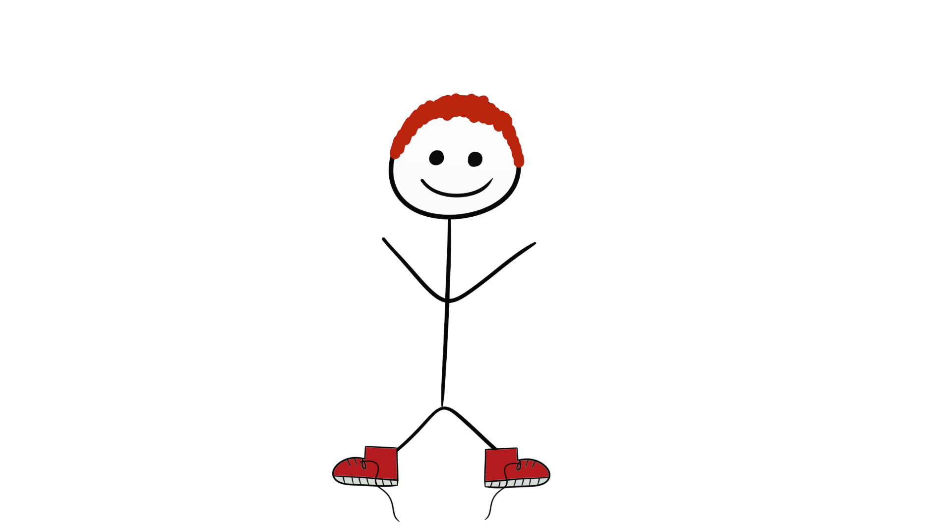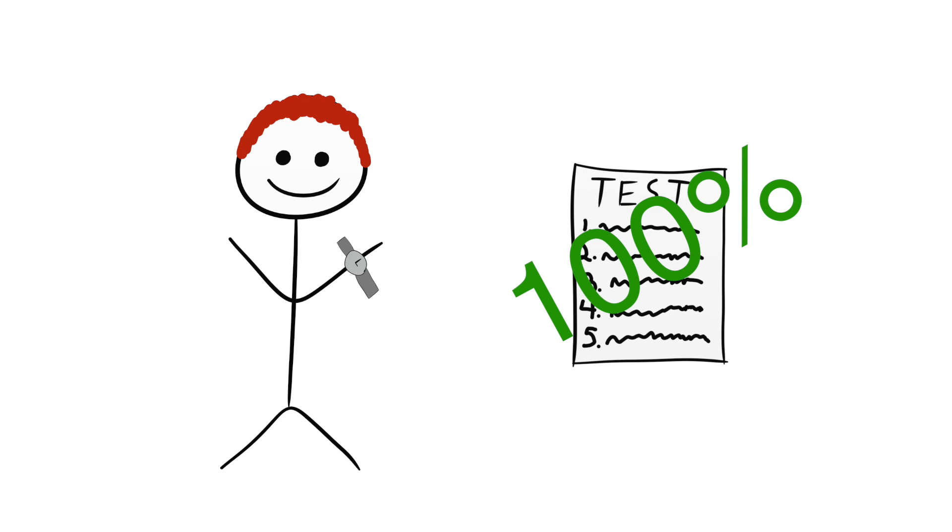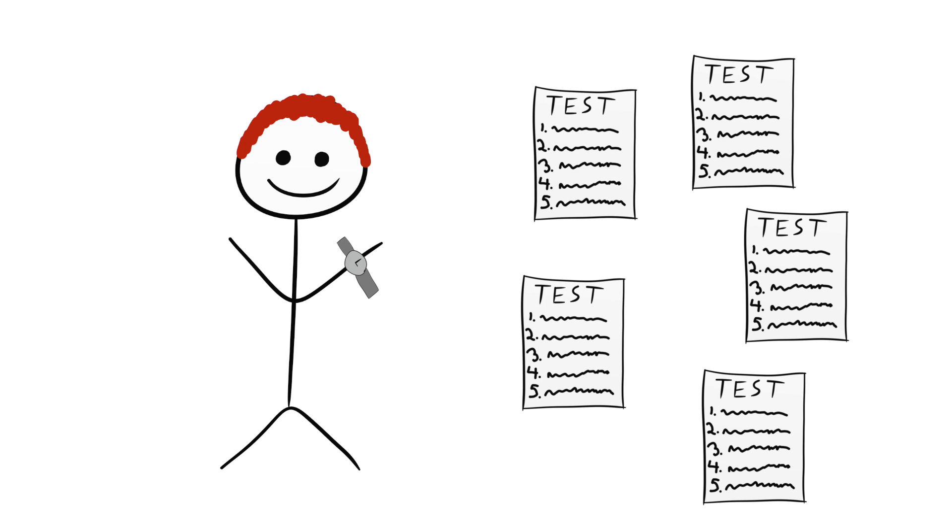Maybe you get a watch for your birthday and wear it to class the same day as a big test. You don't normally do well in testing that class, but on the day you wear that watch, you get 100%. Now you wear that watch during every test you take.